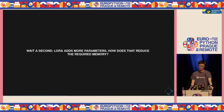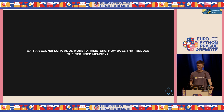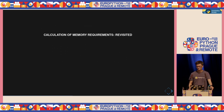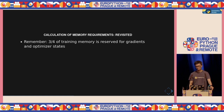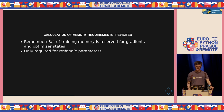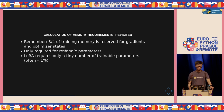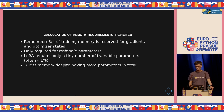If you paid attention, you're probably asking yourself: if we're adding more parameters to the model, how come we need less memory? Well, let's revisit. Three quarters of the memory we needed was required for gradients and optimizer states — but these are only required for trainable parameters. The base weights are not trainable, so we don't need to calculate gradients and optimizer states for them. The LoRA weights are typically much fewer — less than 1% of the total number of parameters. So we only have to calculate gradients and optimizer states for 1% of the parameters, meaning we need less memory to train despite having more total parameters.